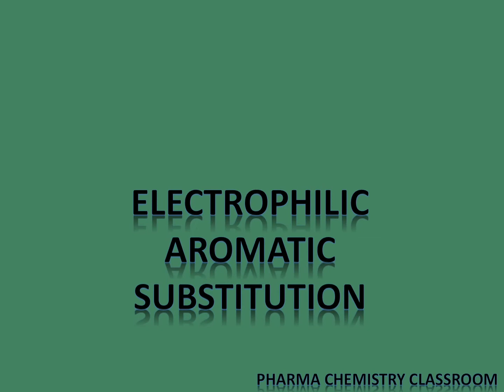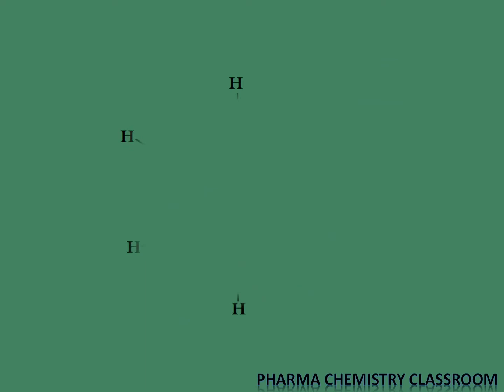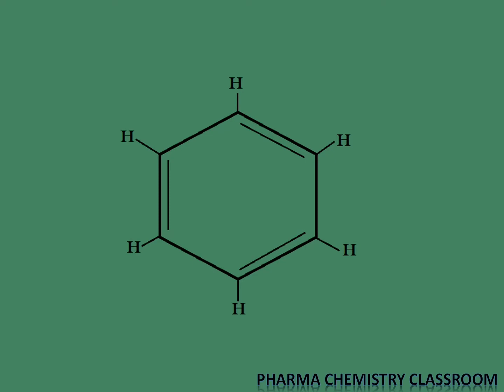Hello everyone. In this video we are going to talk about electrophilic aromatic substitution reaction. From the name itself, it is understood that the reaction takes place on an aromatic ring where one of the protons of a benzene ring is replaced by an electrophile. Electrophiles are electron deficient species.